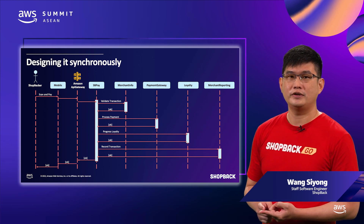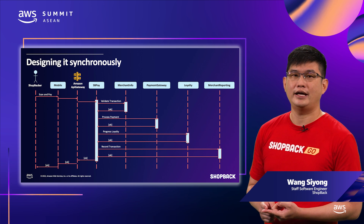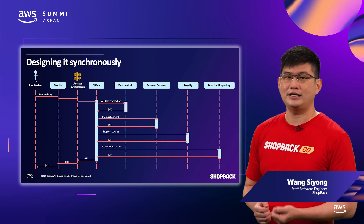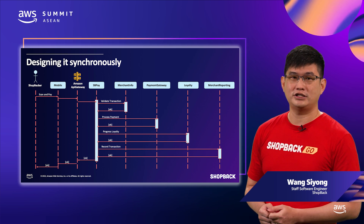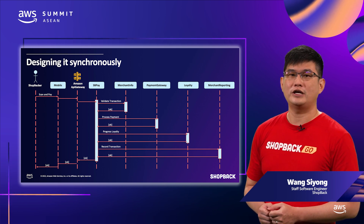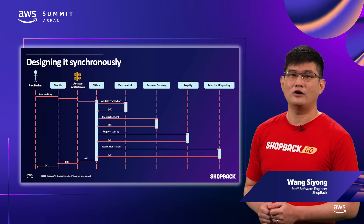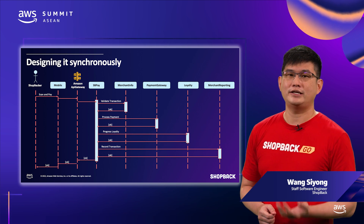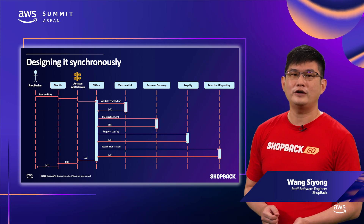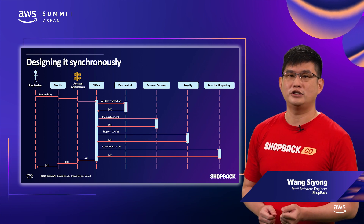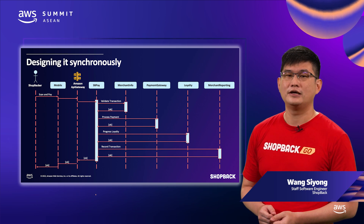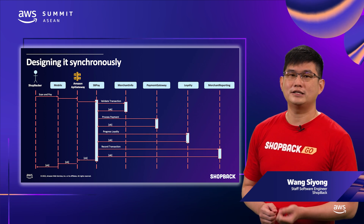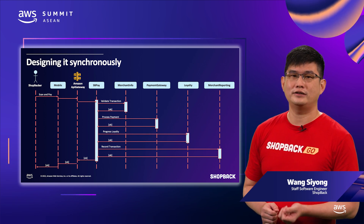After a successful payment, it progresses loyalty rewards with our loyalty service. And lastly, it records the transaction with our merchant reporting service so the merchant sees it on a dashboard and in the settlement report. Even in this simplified diagram, you can see the latency of the call equals the accumulated latency of all internal network calls.